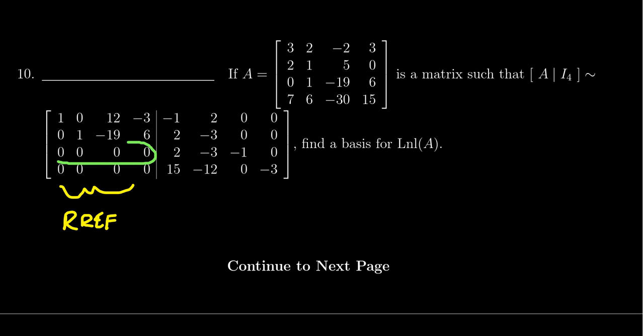If A doesn't have any rows of zeros, which is a possibility, it would mean that the left null space of A is trivial, in which case its basis would be the empty set. We do see there, in fact, two rows of zeros in the row reduced echelon form of A.